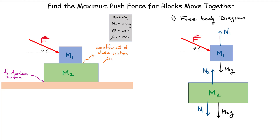Now think about friction — how do we draw friction on this problem? Think about the bottom block: if you apply a small force and the blocks don't slip, the bottom block is going to accelerate to the right, so there has to be a friction force acting in that direction on M2. This is the force of static friction — I don't want the blocks to slide with respect to each other, so it must be static friction. And on M1, there is a static friction force that opposes the motion in the opposite direction.